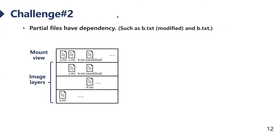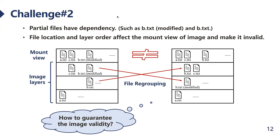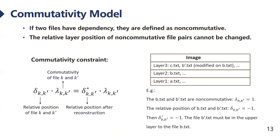Second, partial files have dependency — for example, file B.txt in layer 3 is a modification of the one in layer 2. Since the file in the upper layer covers the one in the lower layer, the file location and layer order would affect the mount view and may cause the image to become invalid. We propose a commutativity guaranteed constraint to solve this issue. If two files have dependency, we regard them as non-commutative — for such layer pairs, the relative position cannot be changed. For example, file B.txt in layer 3 must be in an upper layer relative to layer 2. The constraint is formulated as shown in the slide.